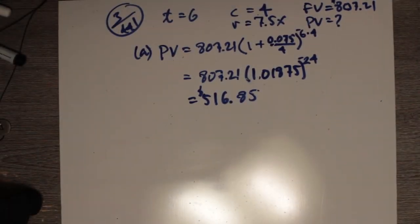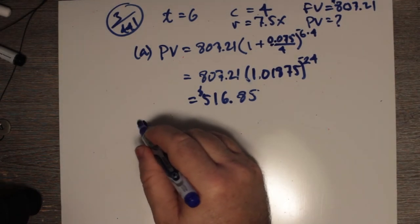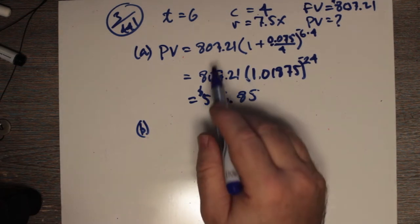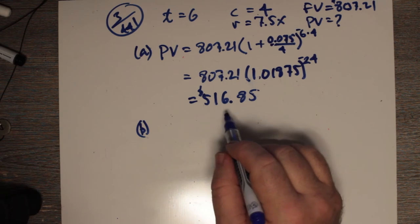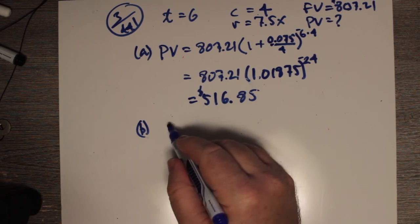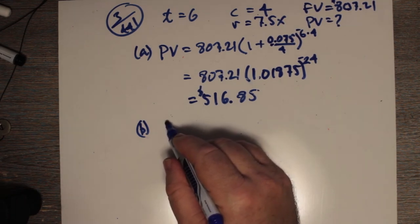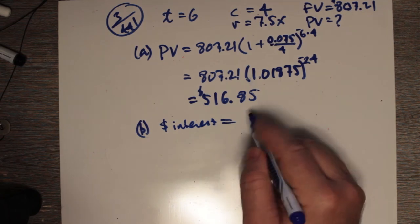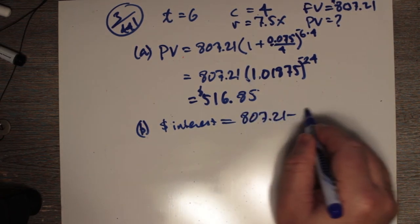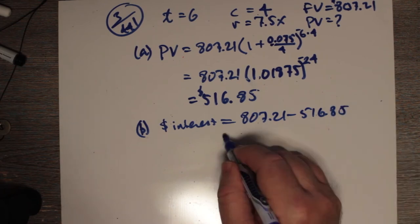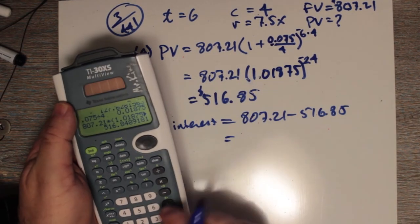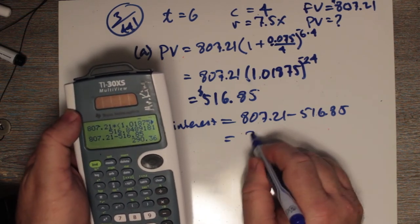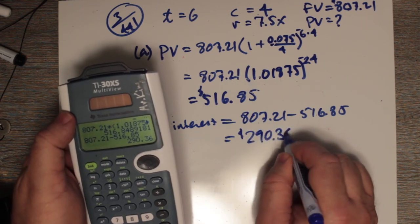The second part of the question asks how much interest will be earned in six years. We simply take the future value minus the present value: $807.21 − $516.85 = two hundred ninety dollars and thirty-six cents.